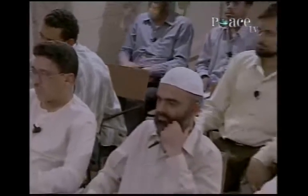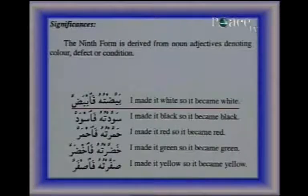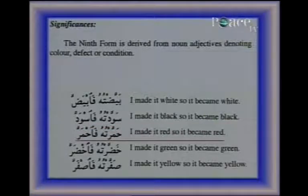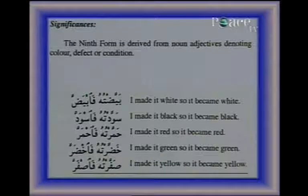The ninth form is derived from noun adjectives denoting color, defect, or condition. For example: I made it white, so it became white. I made it black, so it became black. I made it red, so it became red. I made it green, so it became green. I made it yellow, so it became yellow. These are the significances of the ninth derived form, quite simple.